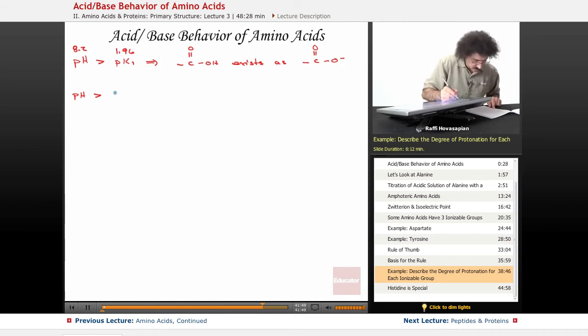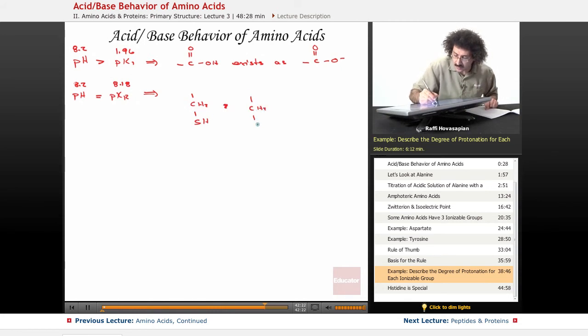Okay. The pH, which is 8.2, in this particular case, it happens to equal the pKR. That's interesting. This is 8.18, the pH is 8.2, and they're exactly the same. So this implies that CH2SH and the CH2S-, they exist in equal concentrations. In this case, the pH equals the pKa of the R group. When pH equals the pKa of the R group, that means the acid form, the protonated form, and the base form, the unprotonated form, exist in equal concentrations.